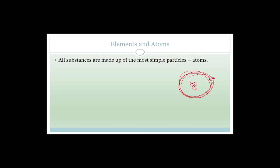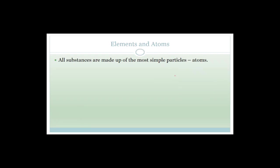I know that some of you might even know about things like quarks and flavors, which are even smaller than protons and neutrons found in the nucleus. Don't stress about that — we're just going to break it down to atoms and then work up from there. We're starting at atoms simplistically. All substances are made up of the particles which we call atoms.